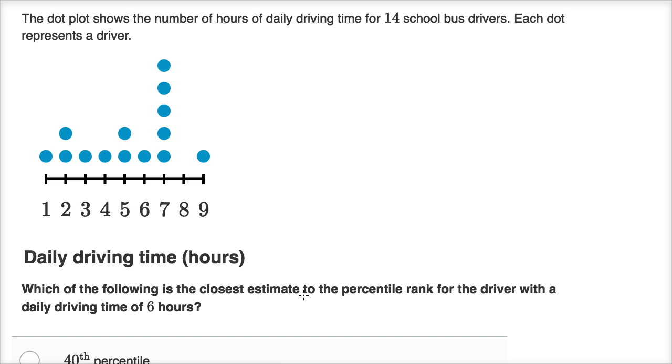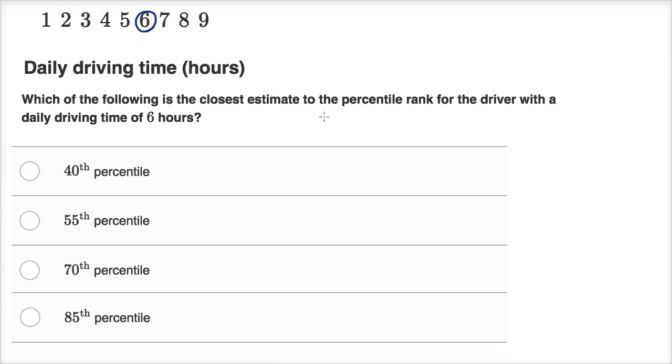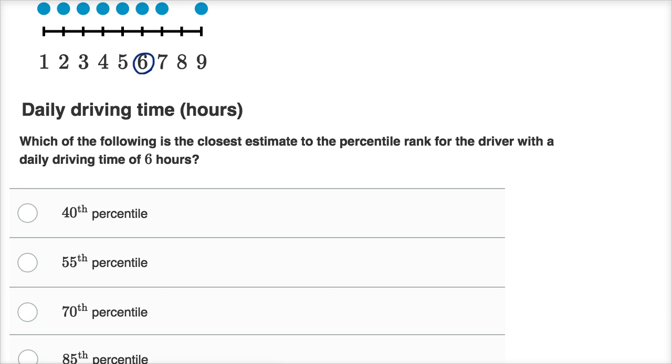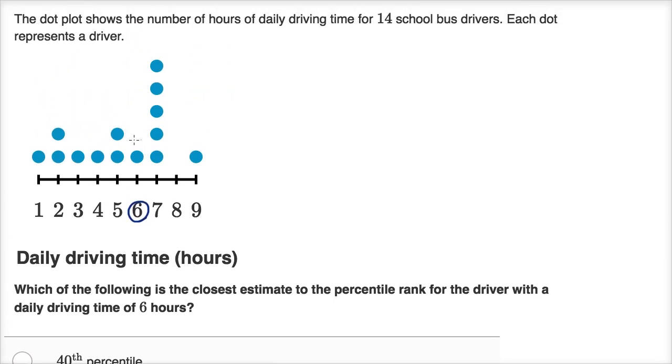Which of the following is the closest estimate to the percentile rank for the driver with a daily driving time of six hours? And then they give us some choices. Which of the following is the closest estimate to the percentile rank for the driver with a daily driving time of six hours? So pause the video and see if you can figure out which of these percentiles is the closest estimate to the percentile rank of a driver with a daily driving time of six hours, looking at this data right over here.